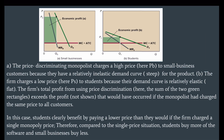In figure A, the price-discriminating monopolist charges a high price Pb to small business customers because they have a relatively inelastic, steep demand curve. The firm charges a low price Ps to students because their demand curve is relatively elastic, that is, flat. The firm's total profit from using price discrimination — the sum of the two green rectangles — exceeds the profit that would have occurred if the monopolist had charged the same price to all customers. Students clearly benefit by paying a lower price than they would under a single monopoly price.